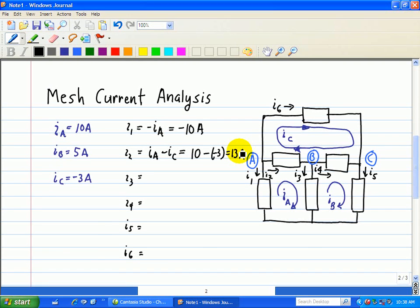Now let's look at I3. It's in the same direction as IA, and it's in the opposite direction of IB. So IA is 10, IB is 5, therefore the current through element 3 is 5 amps.